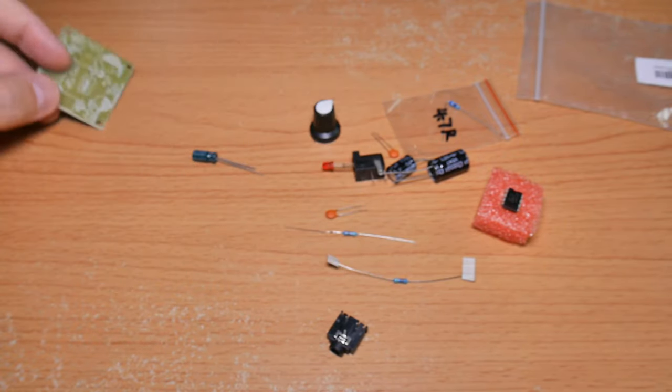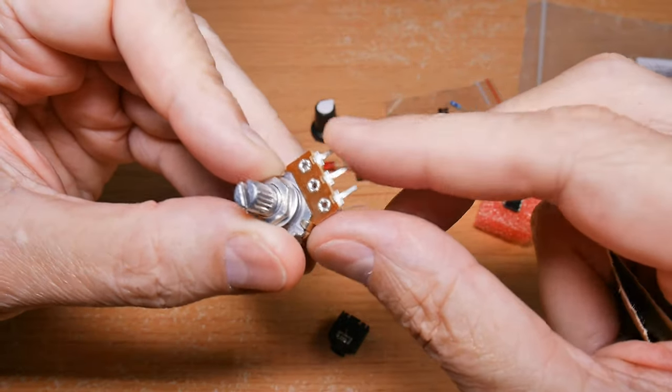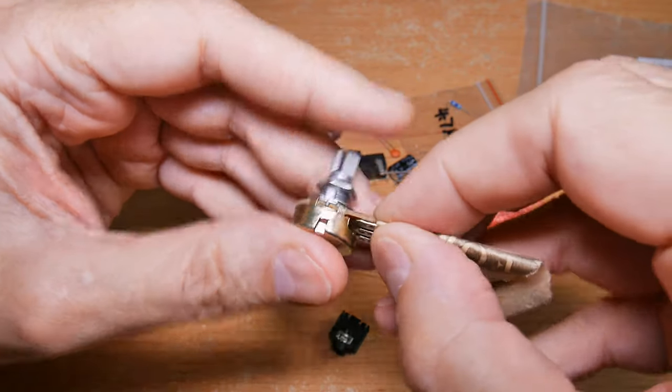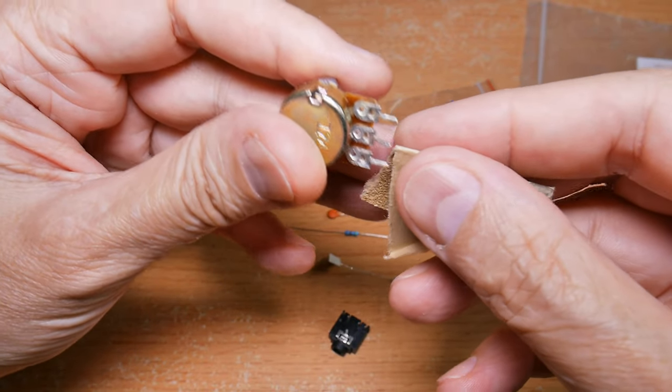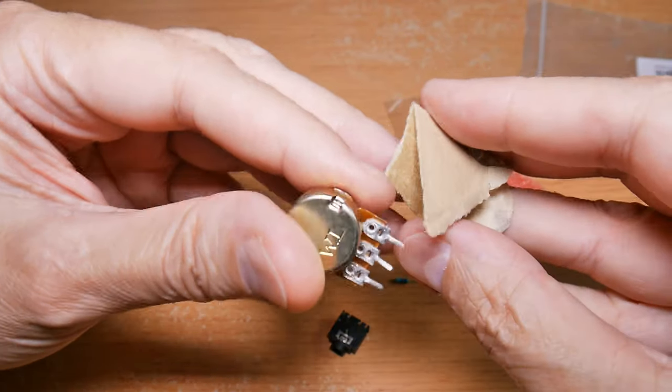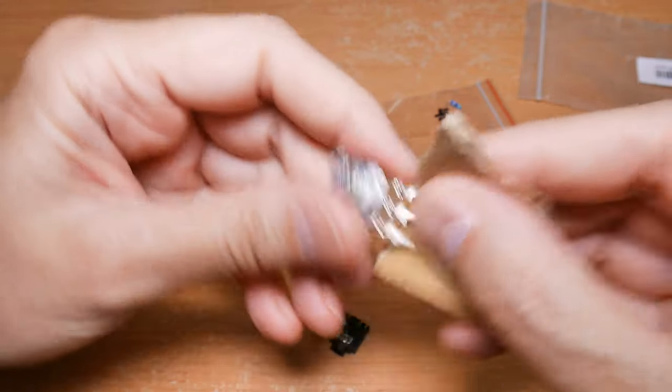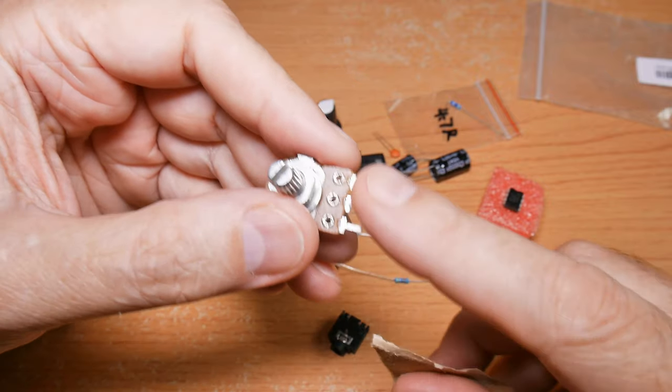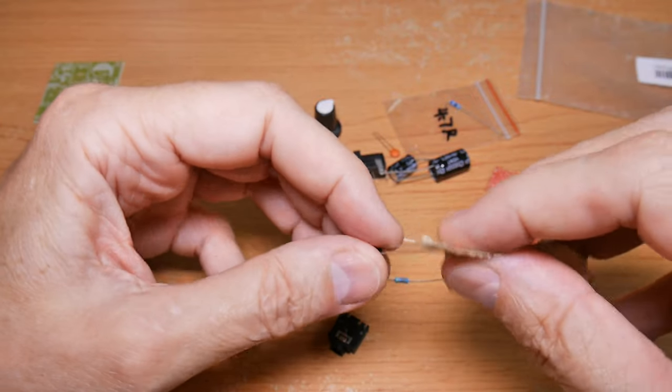Next step is to clean all the solder leads, and I usually do that with a piece of sandpaper. You want to get them pretty well. Make sure you get all of those, make sure they're nice and shiny, and set that off to the side. You want to do the same for all of the leads of all the components.